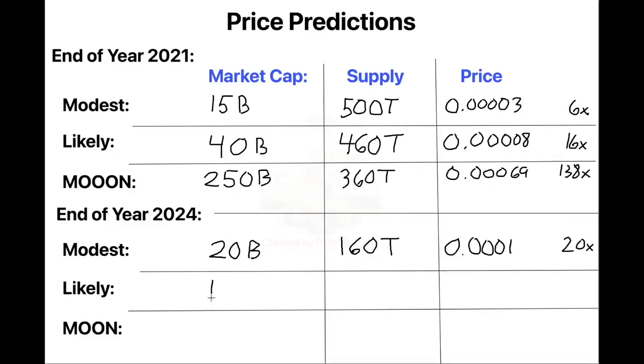My likely prediction in three years would be a $100 billion market cap, and $100 trillion in supply, leaving us with a price of $0.01, or one-tenth of a penny, or a 200x jump from here. And my moon prediction for three years, it matches Bitcoin as a store of value, huge global support, used throughout Africa. If all these came true, we could potentially see a $1 trillion market cap for SafeMoon. And if we can burn that supply down to 50 trillion coins left, that would leave us with a price of $0.02, or 4,000x from here.